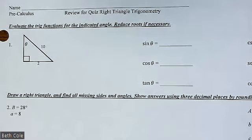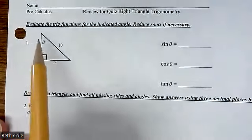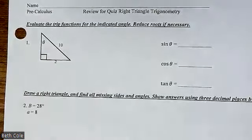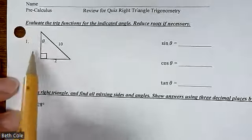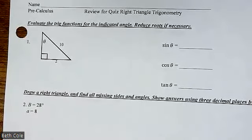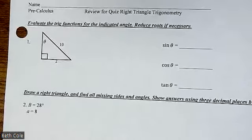All right. So before we can start filling in any of the answers, you have to get this missing side. So how would we do that to get the one that's missing? Good. Pythagorean theorem.